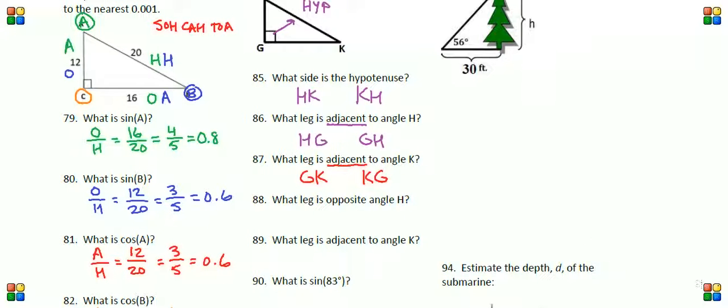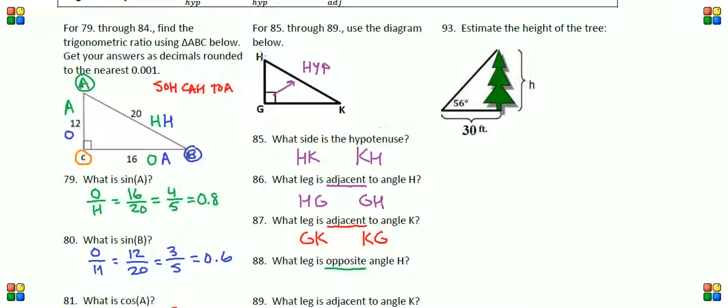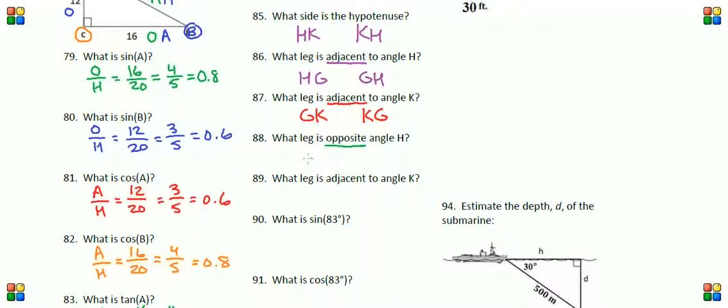Number 88: which leg is opposite of angle H? So opposite of angle H, let's go back to angle H and take a look. The leg that's opposite is the leg that does not touch angle H, and that would be GK, or we could also call that KG.